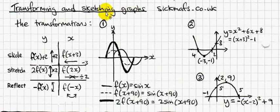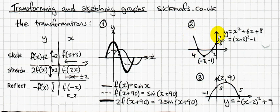Transforming just means sliding, stretching, and reflecting graphs. Sketching is a fairly straightforward thing — you just draw the rough shape of a graph and say where it crosses the axes. Sometimes you note where the minimum or maximum point is, but the main thing is just to say where it crosses the axes.